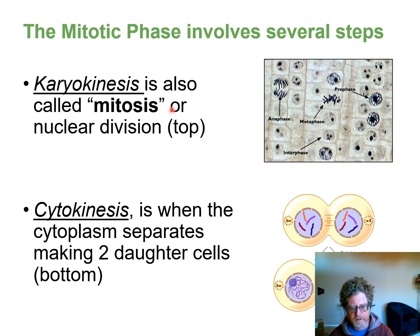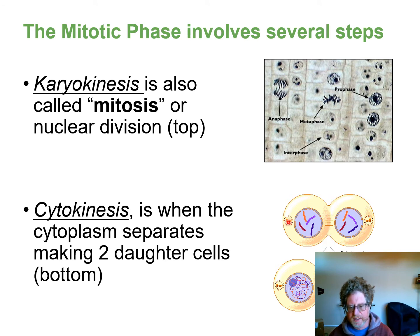After the nuclear material divides — after the DNA divides — you get cytokinesis. In animal cells the cell just pinches in, the nucleus reforms, and now you have two cells both identical to the original cell.